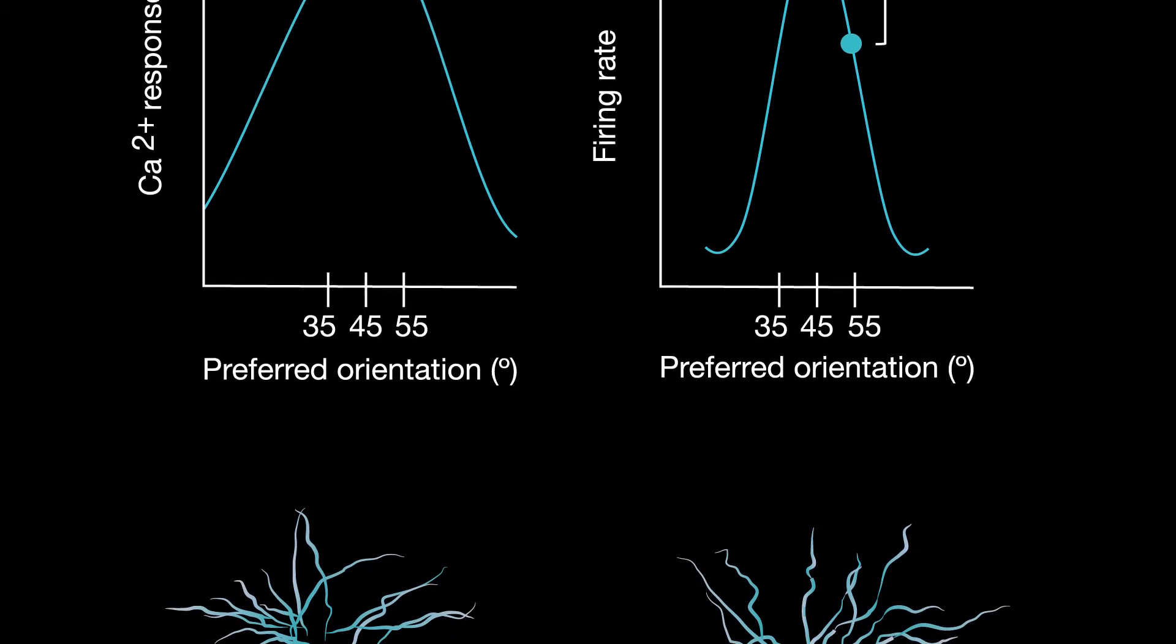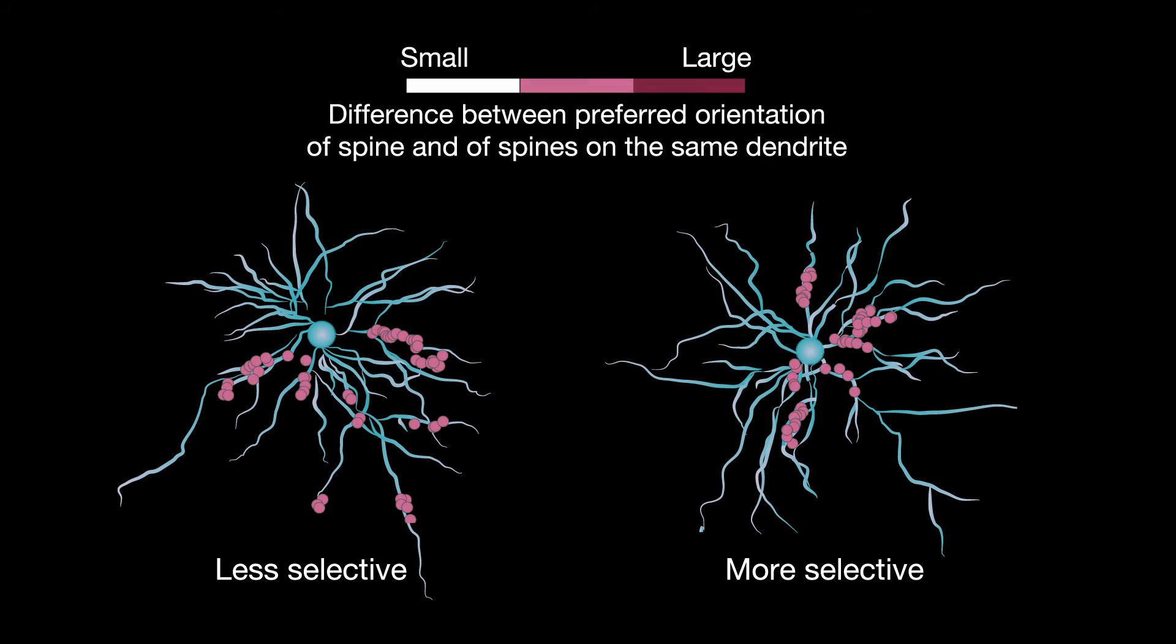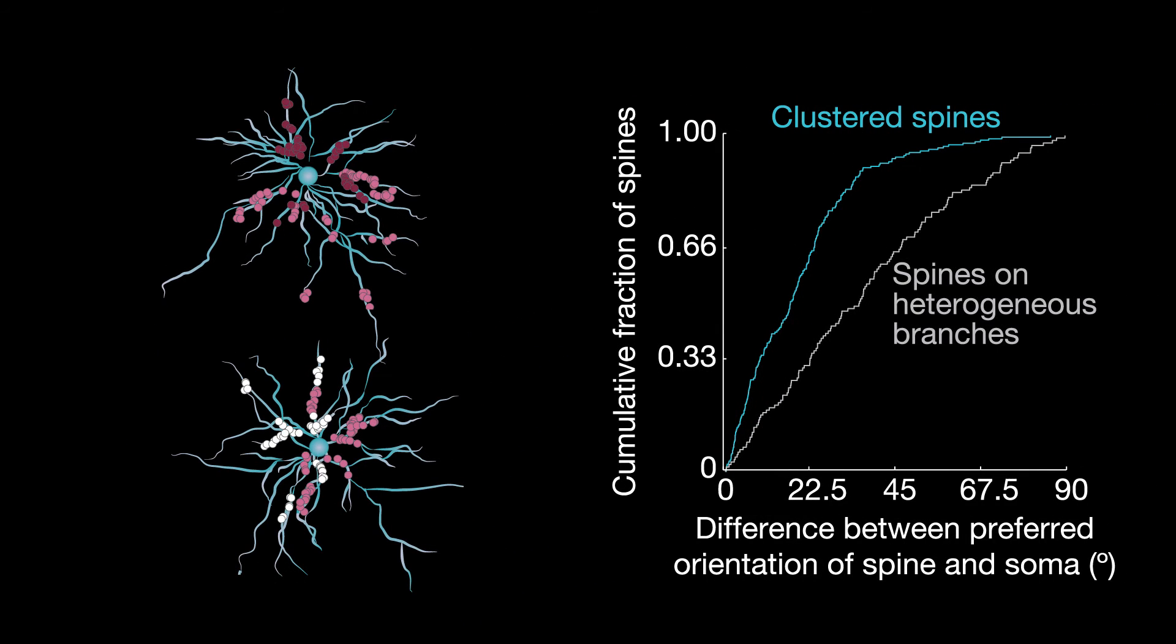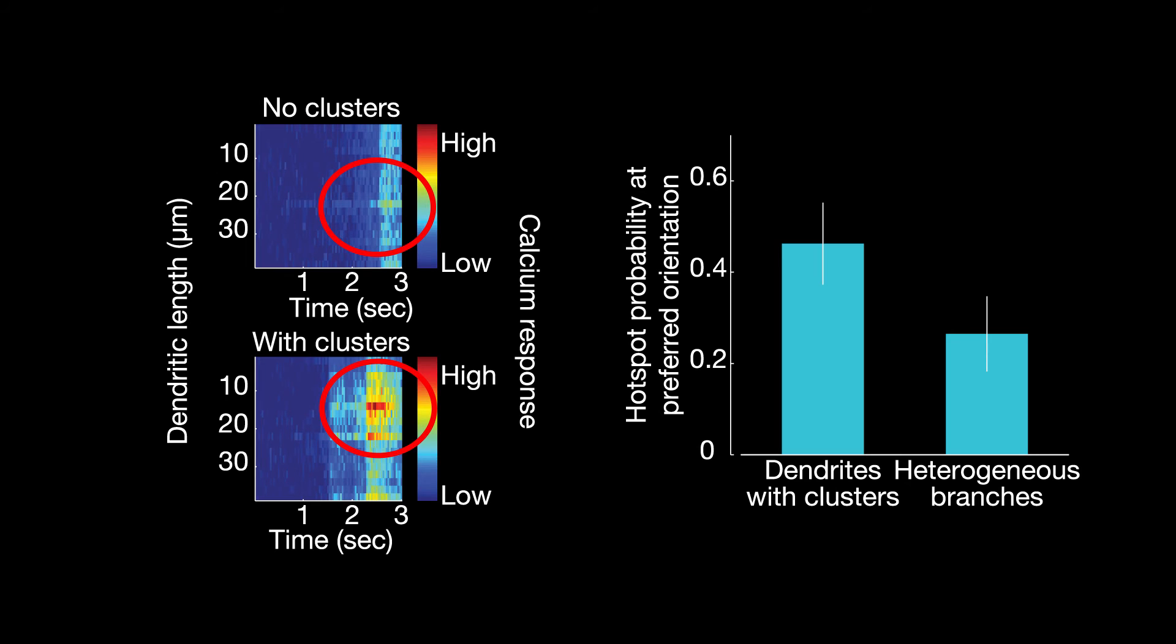How was this filtering and additional selectivity created? The researchers found that spines with the same preferred orientation were clustered along the dendrites, and that the orientation preferences of the clustered spines were more likely to match the neuron's preferred orientation. Their responses were also amplified due to differences in calcium signaling within dendrites with clustered spines versus those without.